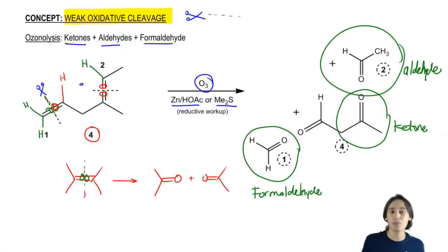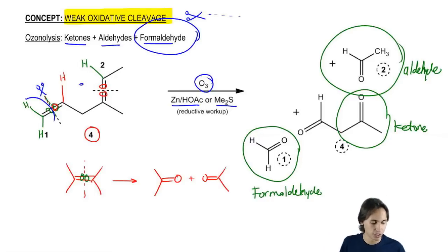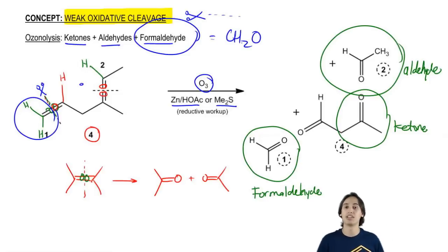So you can remember that ozonolysis yields ketones, aldehydes, and formaldehyde, but you could just draw it out and if you draw it out, everything is going to be correct anyway even if you didn't remember that. All you have to do is add O's to the double bond. Now basically ketones and aldehydes would be for molecules with more than one carbon. Formaldehyde is basically just what you get when you have a one carbon chain that breaks off like right here.